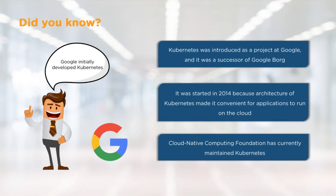A little bit of background and trivia around Kubernetes: Kubernetes was originally a successor to a project at Google called Google Borg, which does exactly what Kubernetes does today. Kubernetes was rewritten from the ground up and released as an open source project in 2014 so that people outside of Google could take advantage of its containerization management tools. Today it is managed by the Cloud Native Computing Foundation, and many companies support it — Microsoft Azure, AWS, and Google Cloud all leverage Kubernetes. It has become the de facto tool for managing large groups of containers.